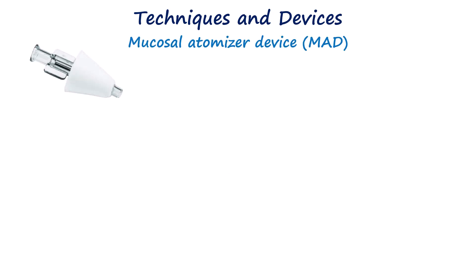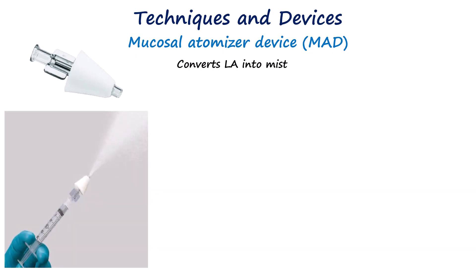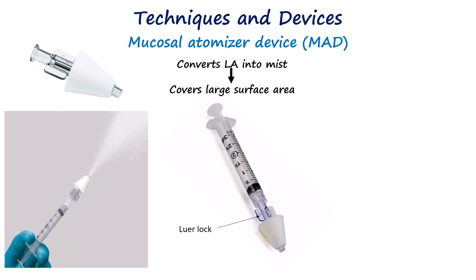A mucosal atomizer device converts a local anesthetic such as lidocaine into a fine mist or particles. This ensures that the anesthetic spreads over a large surface area, effectively reducing the dose while increasing coverage. For deeper structures, a mucosal atomizer device with a longer malleable catheter — known as a laryngotracheal mucosal atomizer device — can be used to deliver anesthetics.